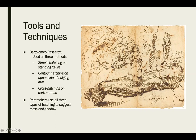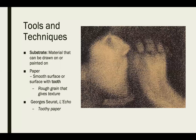Printmakers use all three types of hatching to suggest mass and shadow. We might normally rely on smudging, but printmaking doesn't allow for that — every mark made is what will translate to the final print. So knowing these drawing techniques well is important to having a really successful print.